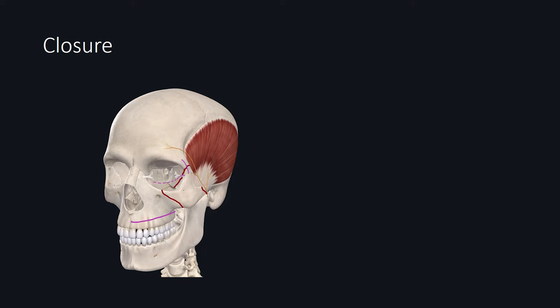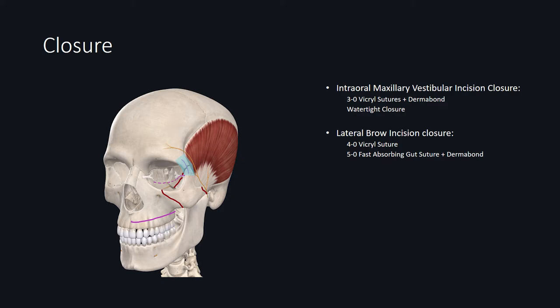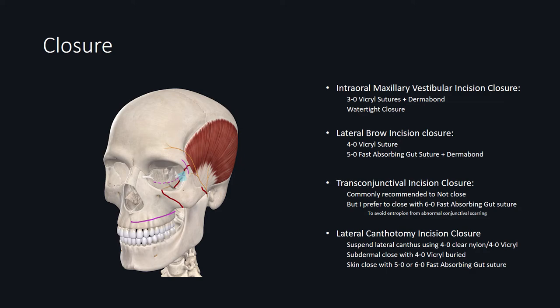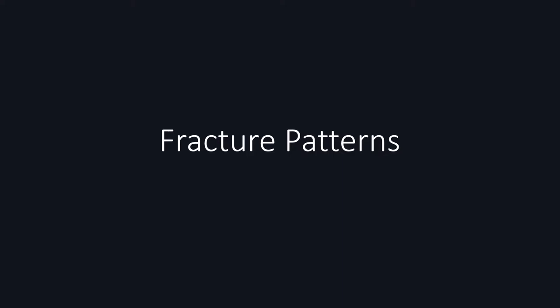For closure, for the intraoral vestibular incision, I'll use a 3-0 Vicryl and dermal bond to achieve watertight closure. For the lateral brow incision, I'll use 4-0 Vicryl sutures and 5-0 fast-absorbing gut with dermal bond for additional support. For the transconjunctival incision, most surgeons recommend not closing it; however, I was consulted on a case where abnormal healing resulted in entropion, so I've been closing all my conjunctival incisions using 6-0 fast-absorbing gut suture. For the lateral canthus incision, I'll suspend the lateral canthus using 4-0 clear nylon or 4-0 Vicryl, with subdermal closure using buried 4-0 Vicryl, and skin closure with 5-0 or 6-0 fast-absorbing gut suture.